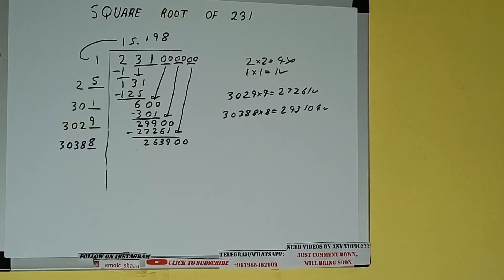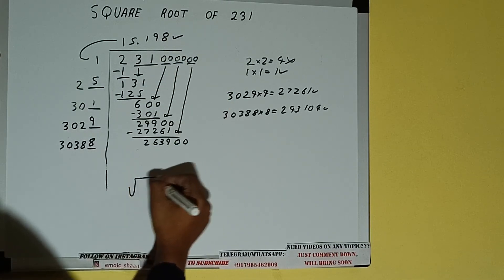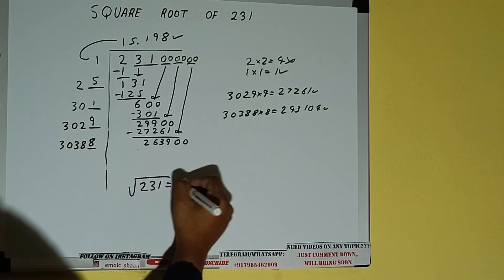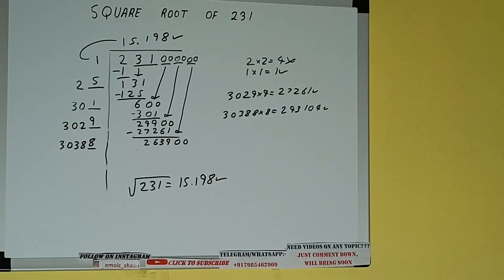But we don't need to calculate because we got the answer correct up to 3 decimal places. So square root of 231 will be 15.198. That will be the answer. So this is all about square root of 231.